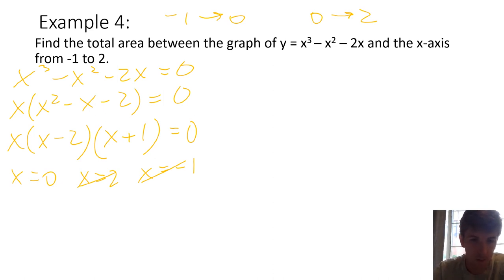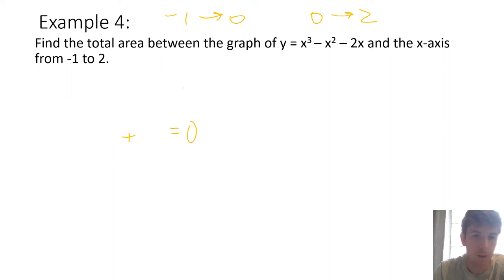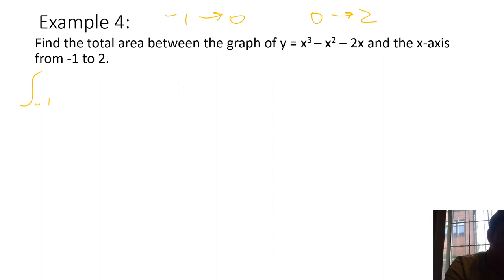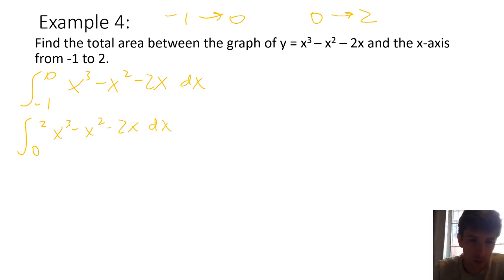We notice two of the zeros are already handled by our endpoints negative 1 and 2, so we really only need two integrals: from negative 1 to 0, and from 0 to 2. We set up both definite integrals of x³ minus x² minus 2x dx — one from negative 1 to 0, and one from 0 to 2.